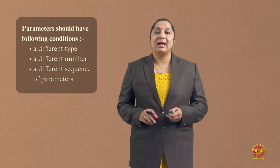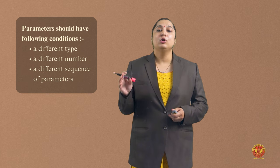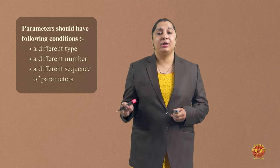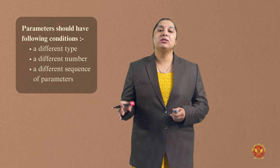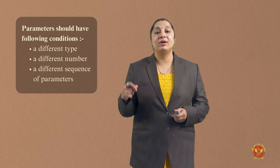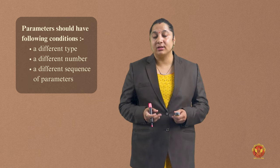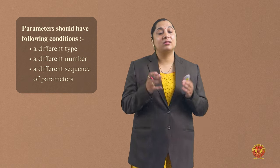For function overloading, there are three rules. The first rule is: parameters should have a different type. The second rule is: parameters should have a different number. The third rule is: parameters should have a different sequence. This is function overloading in C++ programming language. You can see the implementation in the BCE practical series topic 24.